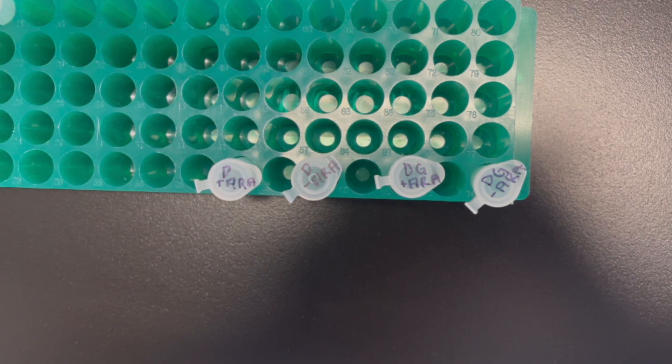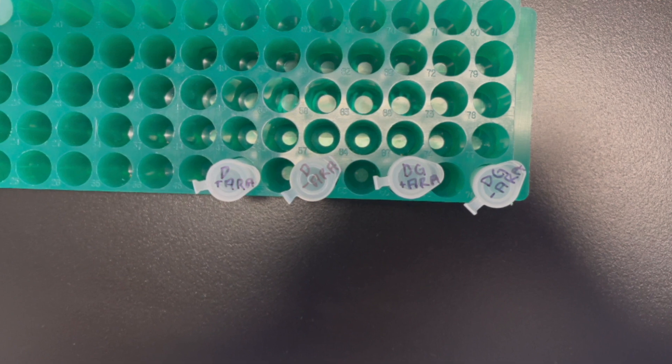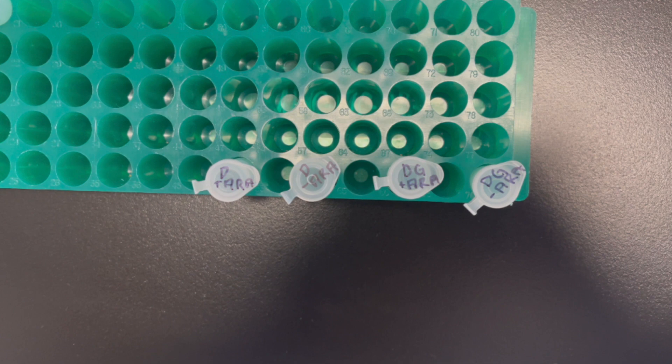The third tube is DG plus arabinose. That means donor guide and arabinose. And the last one is DG minus ARA which means that it has a donor guide but doesn't have arabinose.